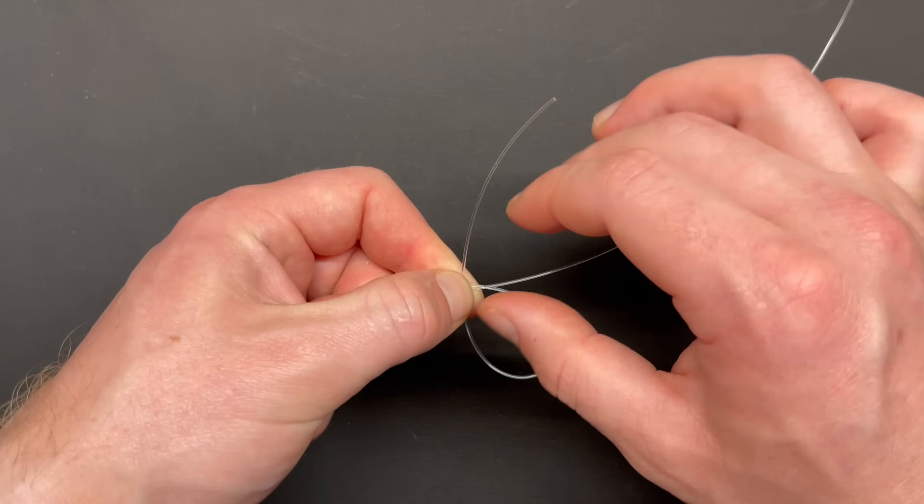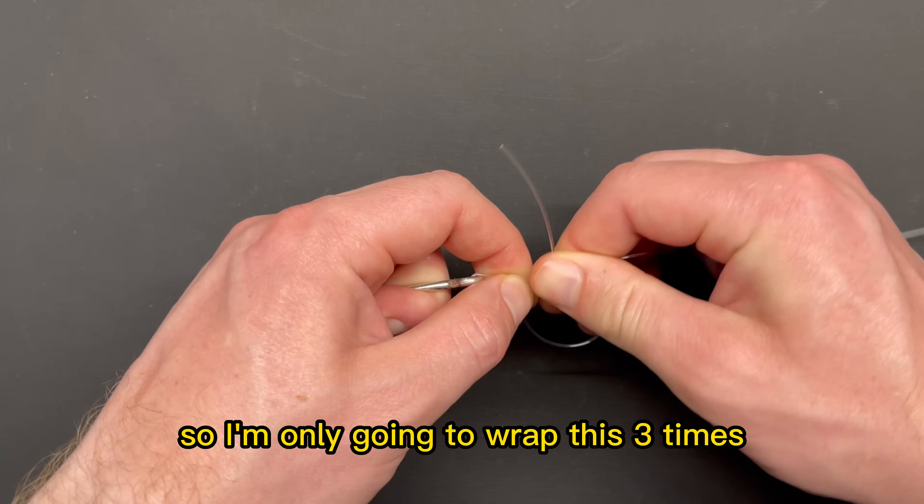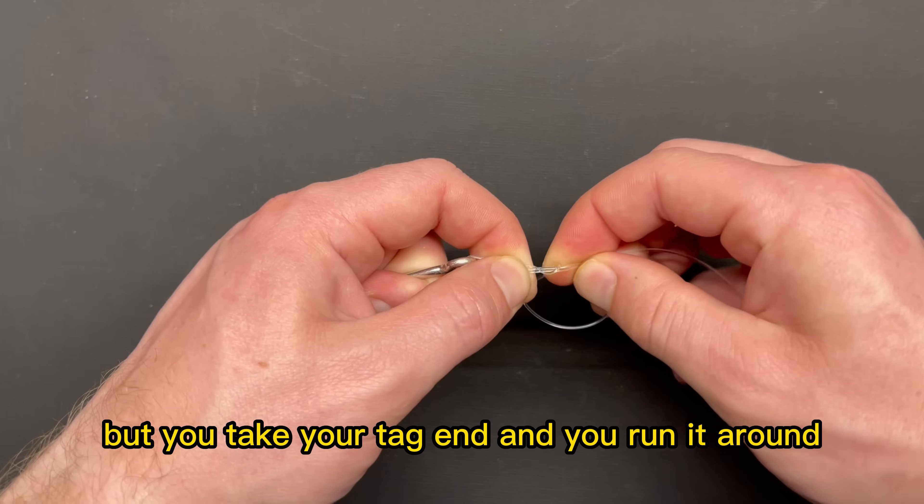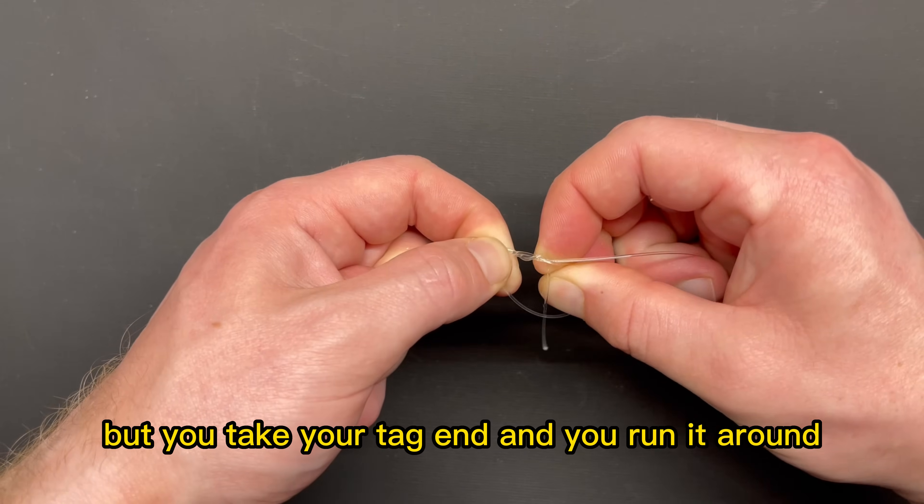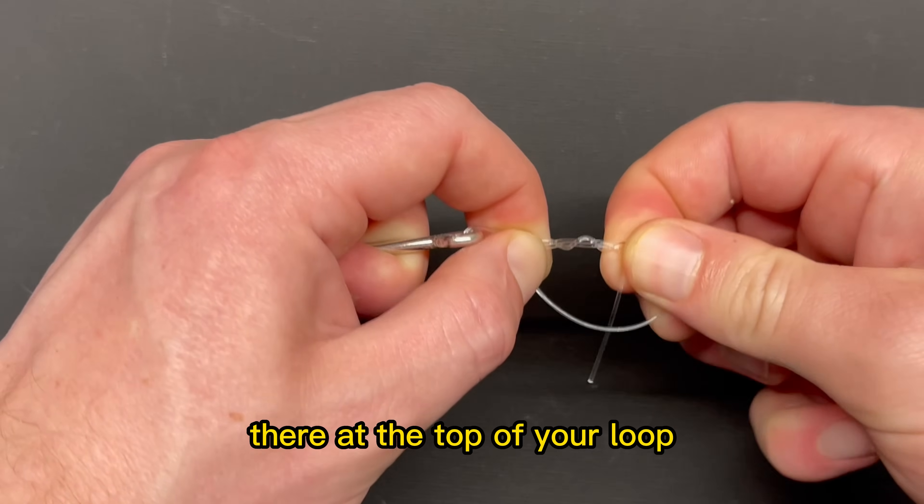Now you've made your six and then this is heavier line, so I'm only going to wrap this three times. You take your tag end and you run it around the two lines that are together there at the top of your loop.